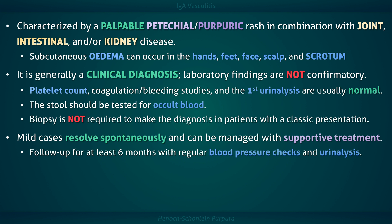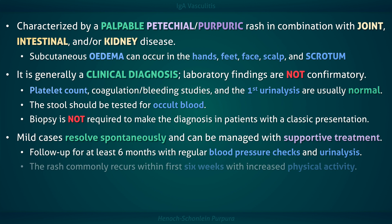Follow up with regular blood pressure checks and urinalysis for at least 6 months. Renal function tests should be ordered if any relevant abnormalities are detected. Inform patients that the recurrence of symptoms is relatively common within the first 4 months, and the rash in particular commonly recurs within the first 6 weeks, especially with increased physical activity.